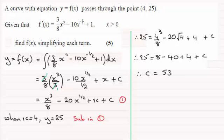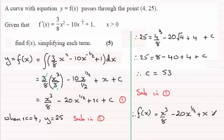And so if I substitute this back into 1, we find that we've got f(x). Okay, I'll just put therefore in there, f(x) equals x cubed over 8 minus 20 x to the power 1/2, or you could write the square root of x there, doesn't matter, plus x, and then plus the constant of integration, which we've just worked out as 53. And there you go.